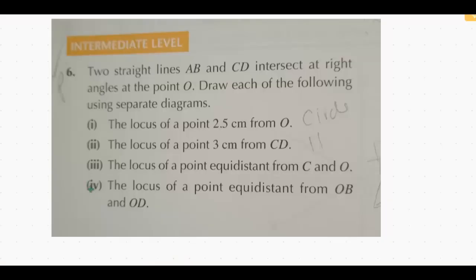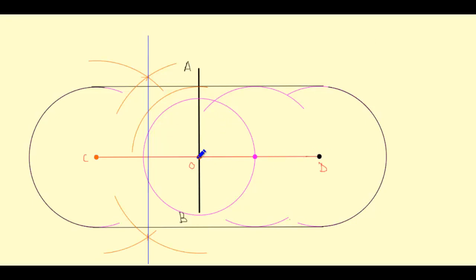The last part is the locus of a point equidistant from line OB and OD. Both lines have O in common, which means they intersect at O — so OB and OD are intersecting lines. A locus equidistant from two intersecting lines is the angle bisector. Here, line OD and line OB form a 90 degree angle between them, and the locus equidistant from these two intersecting lines is the angle bisector. Therefore, we will draw the angle bisector of these two lines.